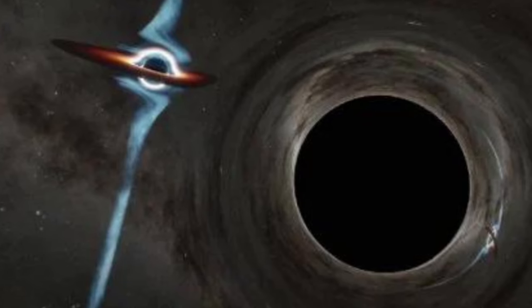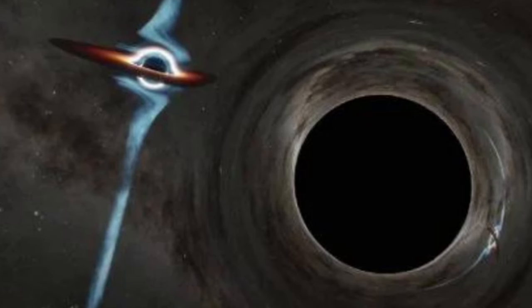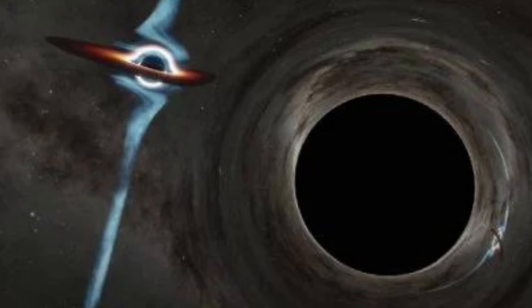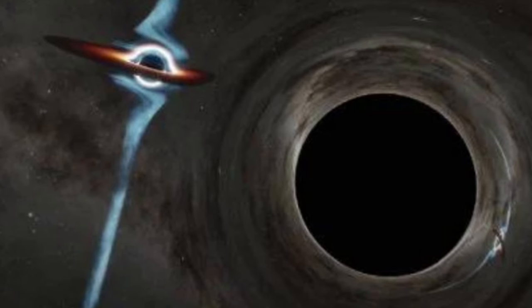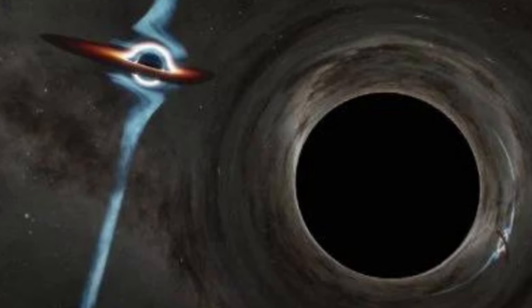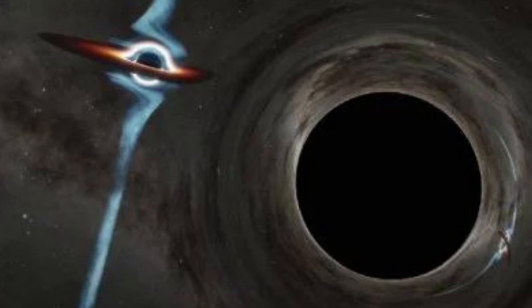A dance of death is taking place at the heart of a galaxy in the distant universe. Some 10 billion light-years away, two supermassive black holes are locked in an orbit so tight that they will collide with each other and form one much larger black hole in the relatively short time of just 10,000 years.